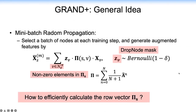To solve the scalability limitation of GRAND, we propose GRAND+ in this work. The general idea is to replace the full-batch power iteration with a mini-batch strategy for feature propagation. In each step, GRAND+ selects a batch of nodes and only calculates the corresponding features for those selected nodes. To achieve that, we need to first calculate the propagation matrix Pi in advance. However, it is hard to obtain the exact form of matrix Pi. In GRAND+, we propose an efficient approximation method to calculate this matrix, which is the key contribution of this work.